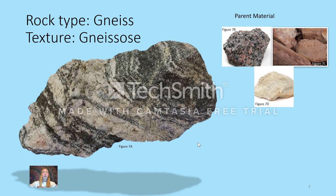Gneiss is the highest grade of foliated metamorphic rock, and it has the most distinct stripes with the greatest contrast of dark and light banding. This rock type is gneiss, and rocks that exhibit this texture are described as gneissose. Gneiss is typically composed of quartz, feldspar, hornblende, and mica. It is a high metamorphic grade, which results in clearly visible light and dark bands, forming at temperatures close to 1,000 degrees Celsius or 1,800 degrees Fahrenheit. The parent material is mudrock, sandstone, and feldspathic igneous rock.